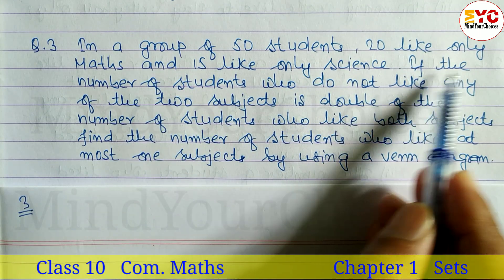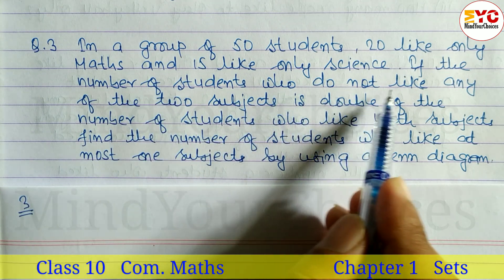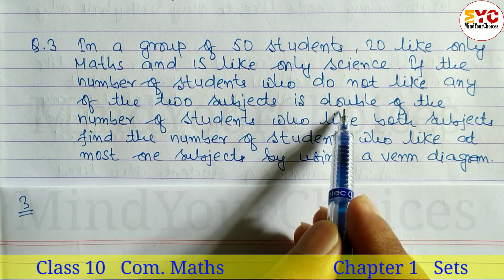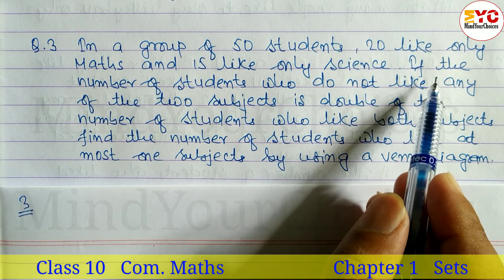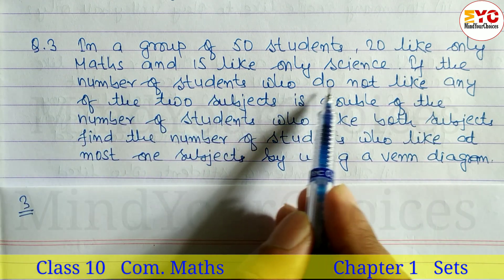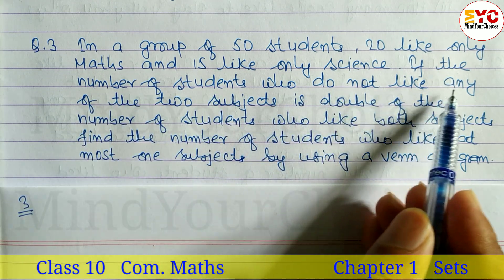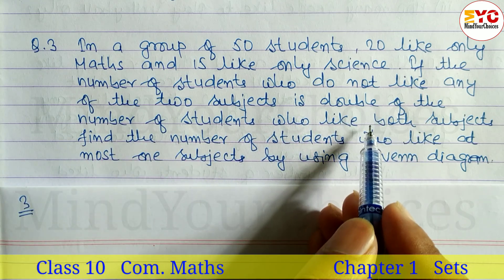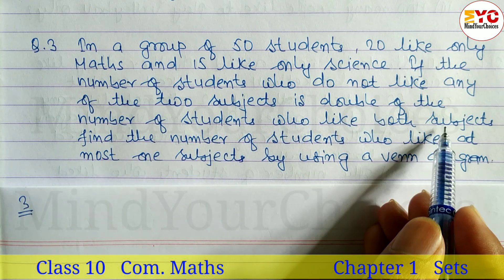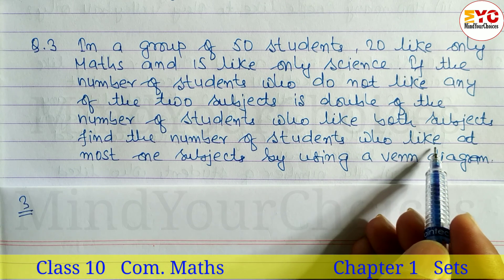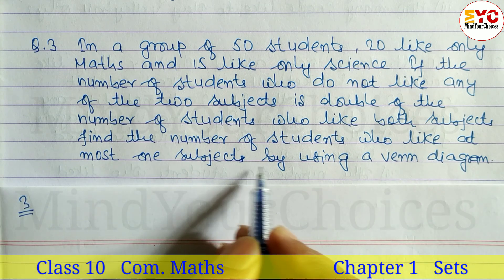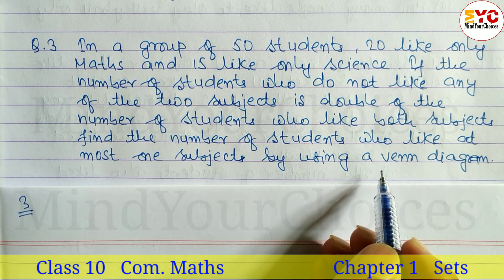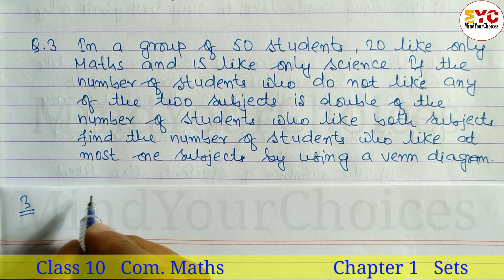The number of students who do not like any of the two subjects is double the number of students who like both the subjects. Find the number of students who like at most one subject by using a Venn diagram.